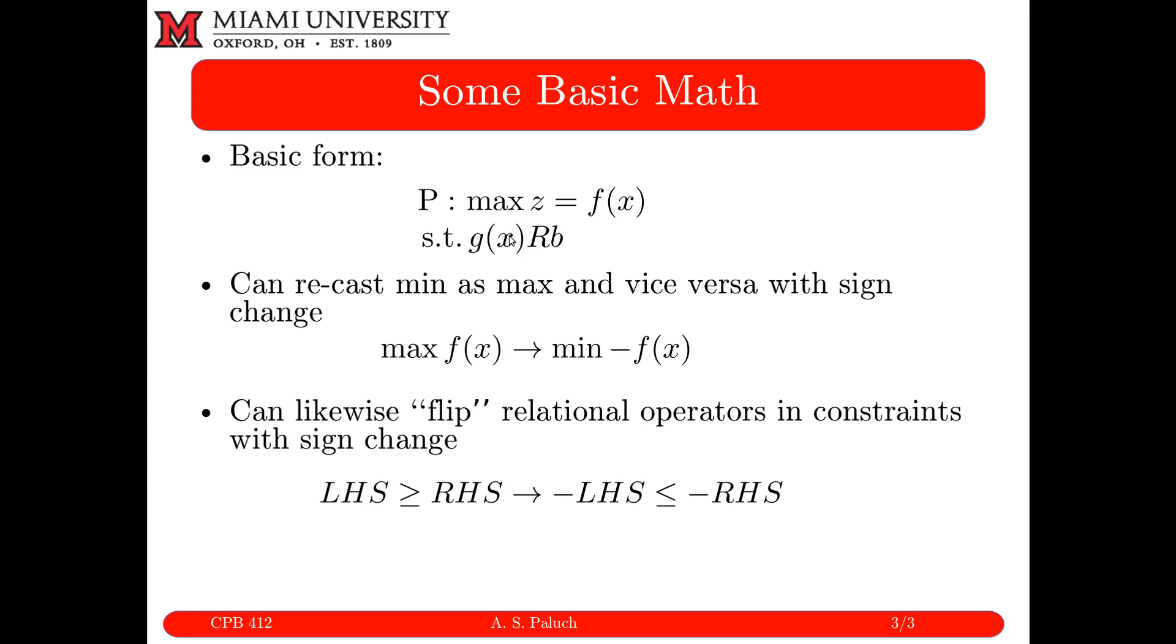But basically what I just want to mention is our optimization problems will typically either maximize or minimize a function. Now we can readily convert from max to min via sign change. So the max of f of x would be equivalent to the min of negative f of x. So you can readily interconvert between maximization and a minimization problem. So that's point one. So for example, when I solve a problem in MATLAB, MATLAB is going to try and maximize. So if I set up my problem to be a minimization, well, I can readily convert from one to the other.